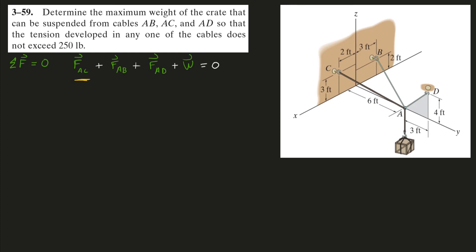The sum of all these forces must equal zero. I have the force in the AC rope, the force in the AB rope, and the force in the AD rope. And of course I can't forget the weight of that crate.